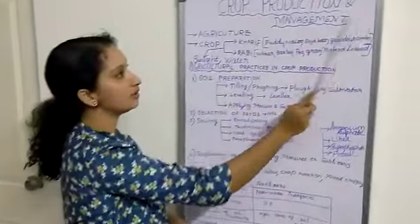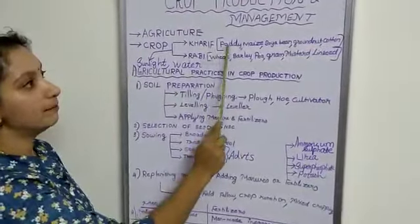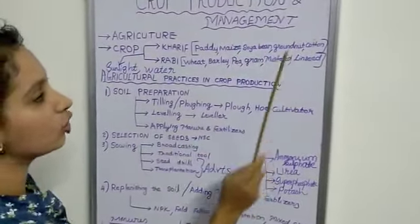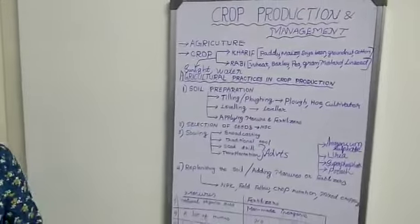Here are the examples. Paddy, maize, soybean, groundnut, and cotton are the examples for kharif crops.